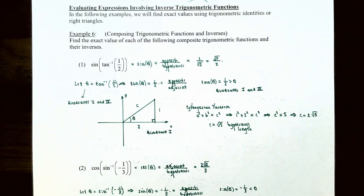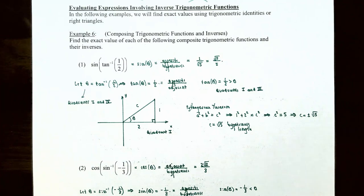So let's talk about evaluating expressions involving inverse trigonometric functions. In the following examples, we're going to find the exact values using trigonometric identities or right triangles. Example six: composing trigonometric functions and inverses. Find the exact value of each of the following composite trigonometric functions and their inverses. Number one: sine of inverse tangent of one-half.